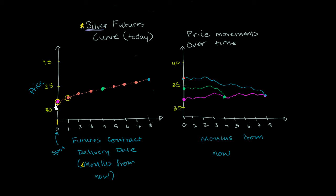If today you agree to transact in silver a month from now, you would buy or sell at around $33 an ounce. If today you were to agree to buy or sell silver four months from now, you would do it at $35 an ounce.